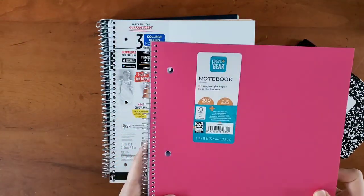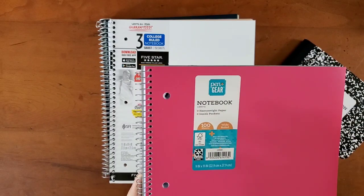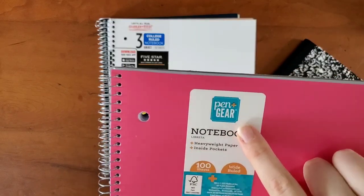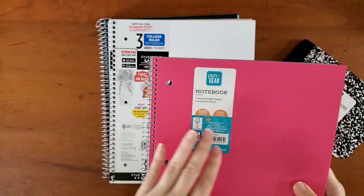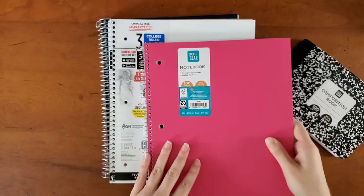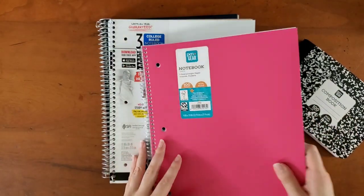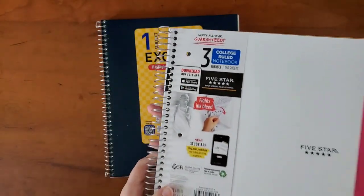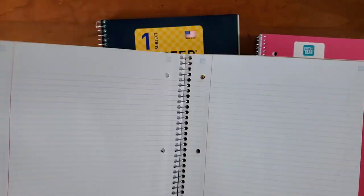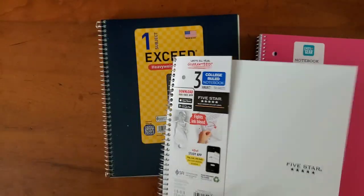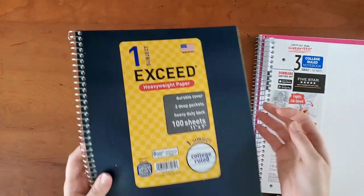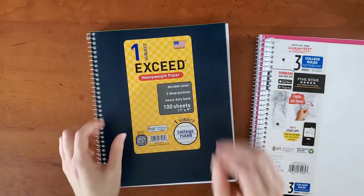I picked up a pen gear notebook. This is a heavyweight paper, wide ruled—that's what they had left. I have a Mead Five Star college ruled, this is also supposed to be heavyweight paper, and an Exceed, also heavyweight paper. This one is college ruled, and the papers all look quite different to me, so I'm looking forward to seeing which one holds up better with my fountain pens.